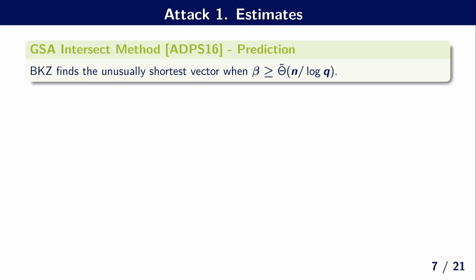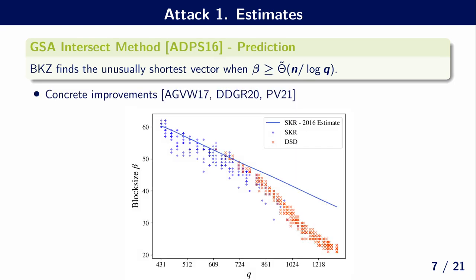BKZ finds the unusually short vector when beta is at least N over log Q, up to logarithmic factors. Additionally, this analysis can be turned into an average-case heuristic analysis that gives concrete predictions. Applying this to the NTRU problem, we can give very precise predictions in the under-stretched regime for low Q. However, in the over-stretched regime for large Q, this prediction doesn't match, and the fatigue point already lies at quite low values of Q.